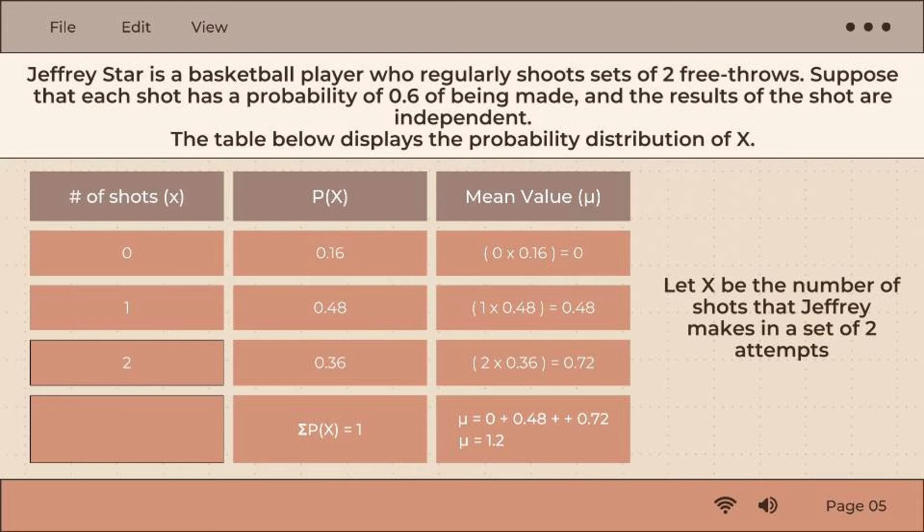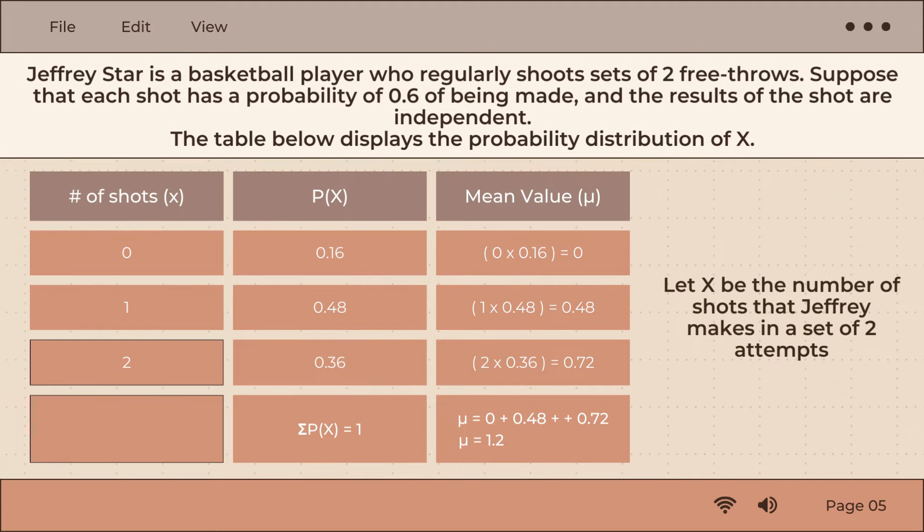So if we add 0 plus 0.48 plus 0.72, you will get 1.2.